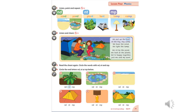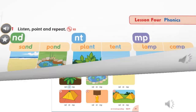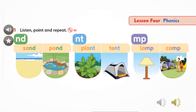Now, my lovely students, open your class book to page 71 and follow along with me. These are the words in your class book that have consonant blends. Please listen to the pronunciation of these words, then repeat.